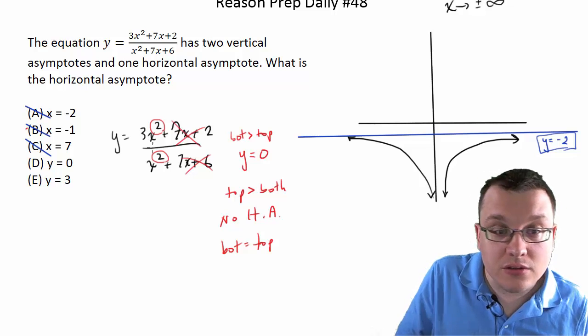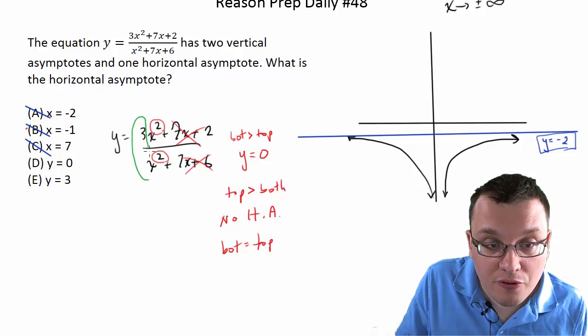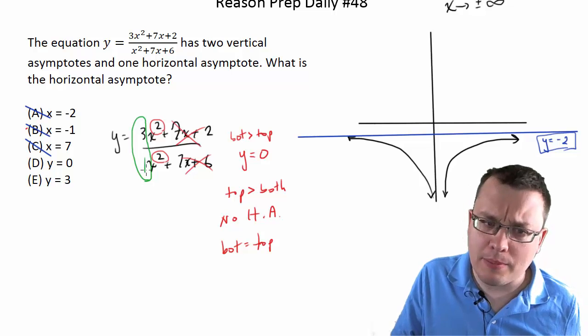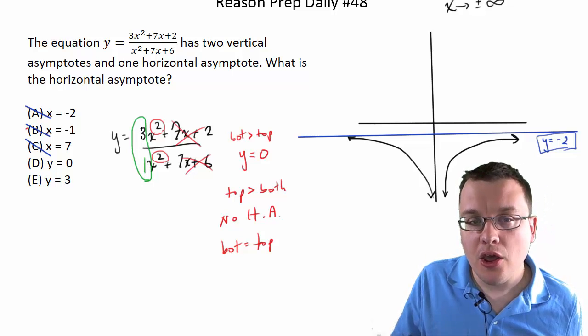then what you need to do is look at the ratio of the coefficients of that term. In this case, it's 3 to 1. Because remember, there's a 1 there that's just not written. So 3 to 1, in other words, 3.